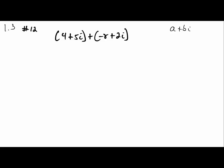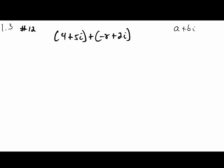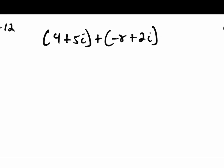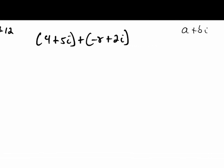Whenever we do complex numbers, we have to simply add or subtract component-wise. So we're going to add or subtract the real part, which is the A, and the imaginary part, which is the B·i. Our final answer has to be in the form of A plus B·i.